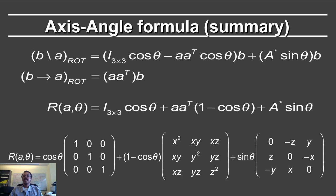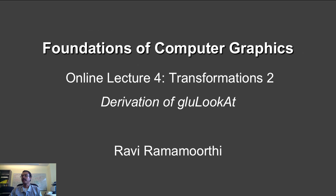Finally, I want to briefly revisit the axis-angle formula derived in the previous lecture. The essential parts are: a part which is the identity times cosine theta, then the A-transpose part, and then the dual matrix cross-product part. Specifically: identity times 1 minus cos theta, times the matrix with quadratic components, plus sine theta times the cross-product matrix — that is what the rotation matrix looks like. All of this gives you enough material to derive the 4 by 4 matrix for GL, which is the large component of what you need to do in homework one.